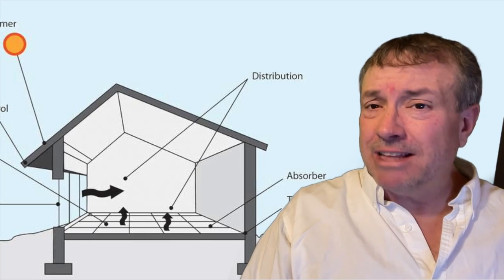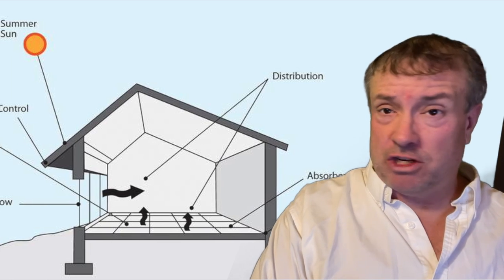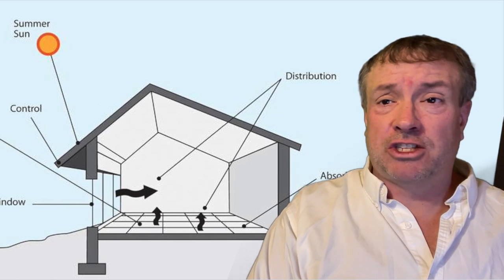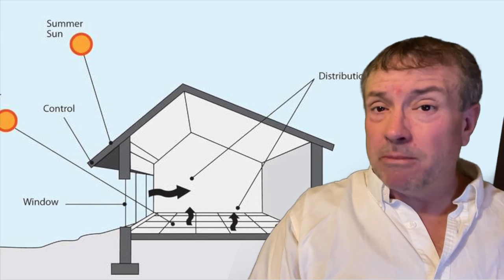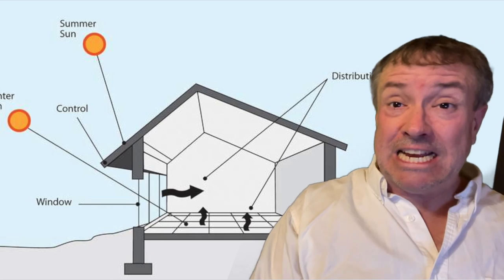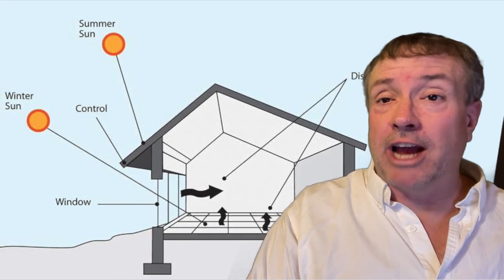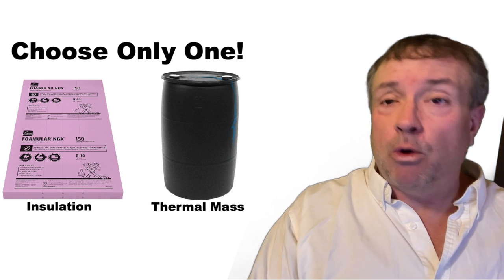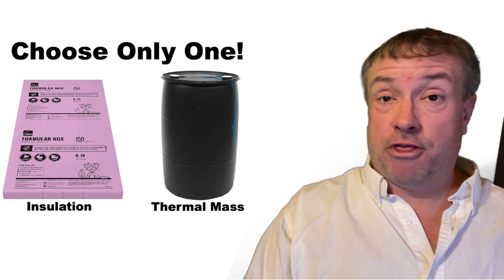You look at diagrams of thermal mass buildings, and there's often no or little insulation on the north wall. It's just thick dirt, stone, concrete wall, or water. How does that work? And some places that have thermal mass walls often don't even have heating systems. Just lots of south windows that allow sunlight to shine on the inside of the north wall. In this video, we're going to explore insulation versus thermal mass.